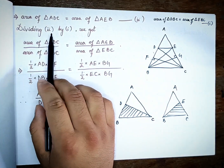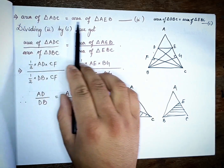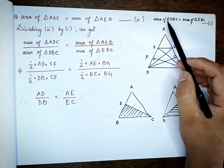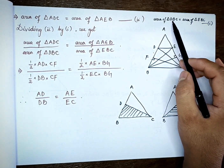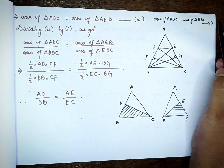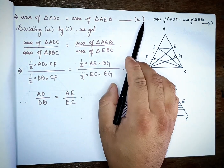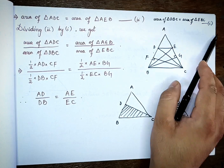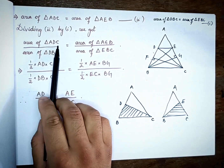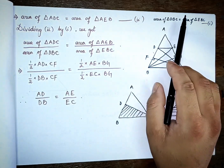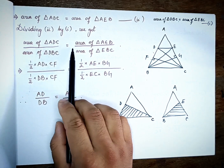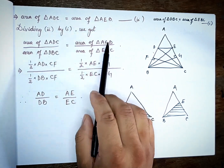Dividing Equation 2 by Equation 1: Equation 2 is area of triangle ADC divided by Equation 1 which is area of triangle DBC, and this equals area of triangle AEB divided by area of triangle EBC.